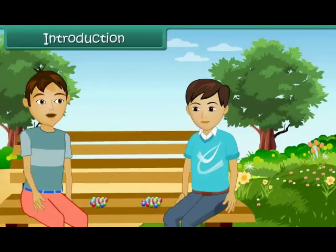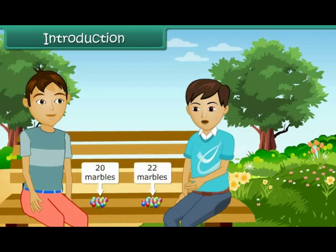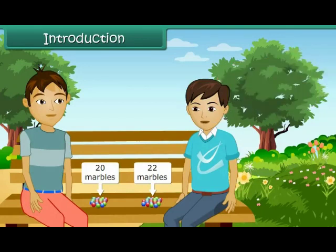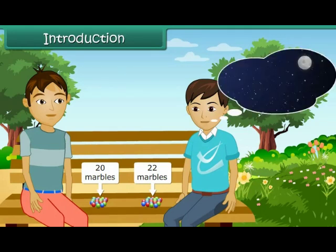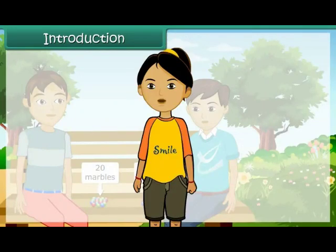I have twenty marbles. I have twenty-two marbles. Wow! I have more than you. We can count the things around us like vegetables, cars, etc. Certain things cannot be counted like stars in the sky, hair on our head, etc. Mathematically, you are talking about whole numbers. Let us learn about whole numbers in this lesson.